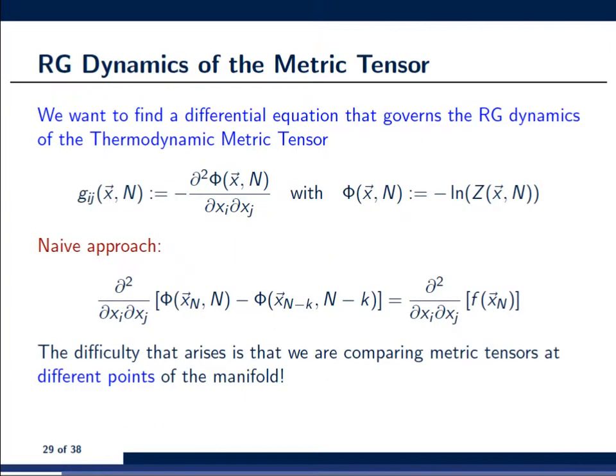Now, what we would like to find is a differential equation that tells us how the thermodynamic metric tensor is changing under the renormalization group flow. And just to remind you, the thermodynamic metric is given by the second derivatives of the free energy in this context, where the free energy is simply minus the log of the partition function.